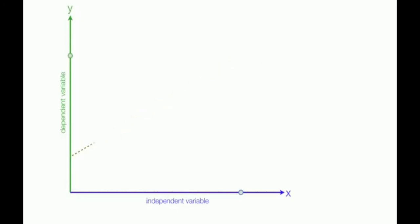If on the other hand, as the independent variable increases and the dependent variable decreases like this, we say there's a negative relationship. The line would look like this, go downward.